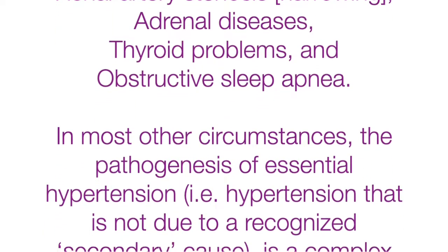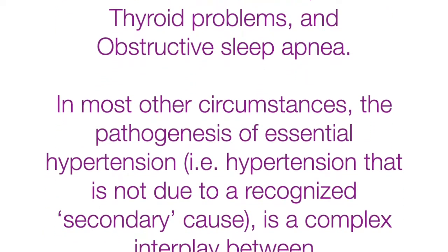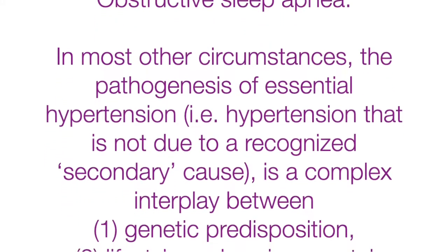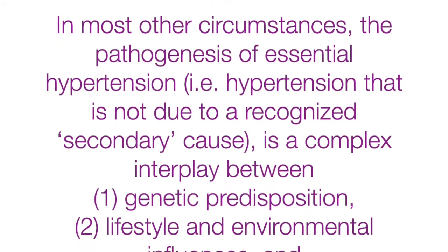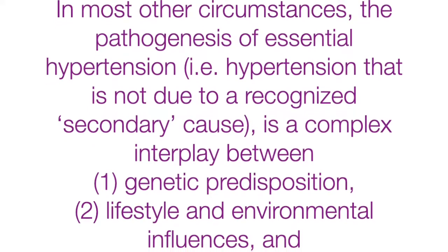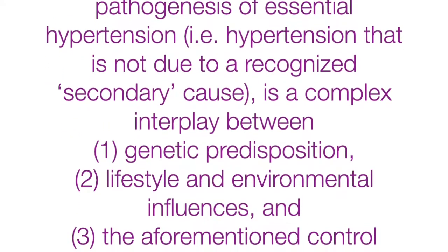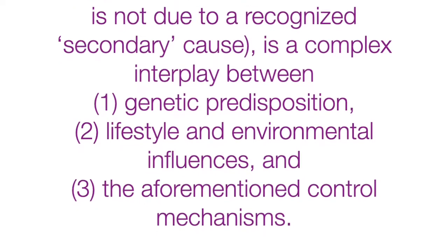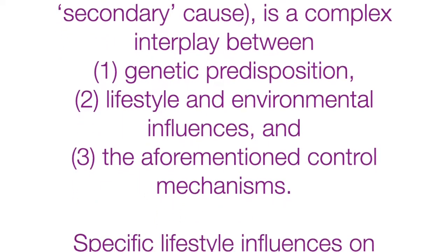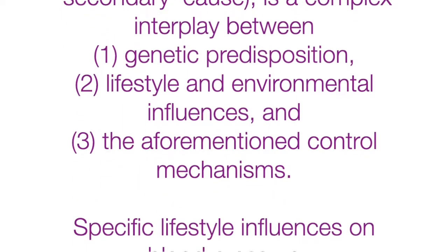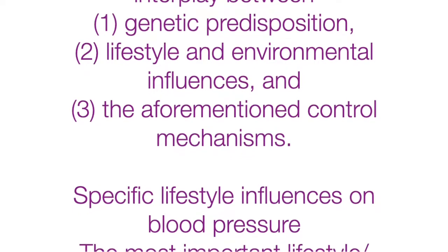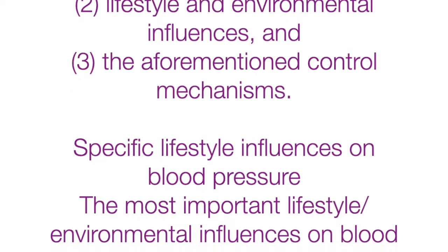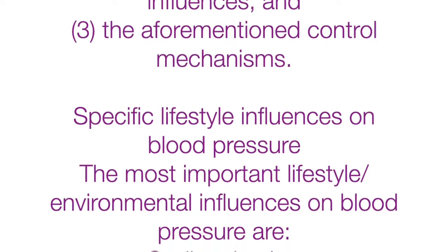In most other circumstances, the pathogenesis of essential hypertension — that is, hypertension not due to a recognized secondary cause — is a complex interplay between: (1) genetic predisposition, (2) lifestyle and environmental influences, and (3) the aforementioned control mechanisms.